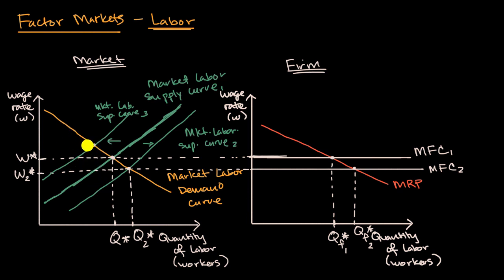So W sub three, just like that. The quantity of labor is going to go down, Q sub three.